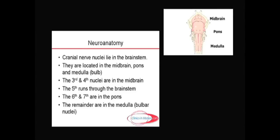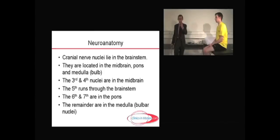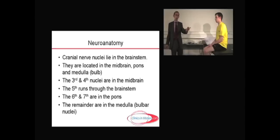The third and fourth nuclei are in the midbrain, the fifth runs more or less through the brainstem, the sixth and seventh are in the pons, and more or less, crudely, the rest of the cranial nerve nuclei are in the bulb or medulla. Midbrain, pons, medulla is the mantra you must understand for the rest of this cranial nerve demonstration.